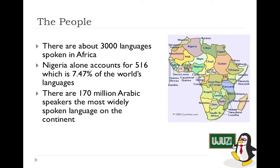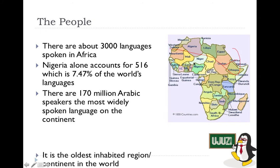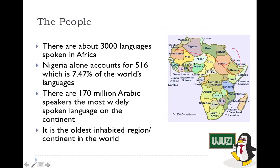The most widely spoken language in Africa is actually Arabic — 170 million people speak Arabic. Most of the northern parts of Africa, including Morocco, Algeria, Libya, Egypt, Chad, and surrounding areas, speak Arabic, which also has some connection to the fact that a lot of them are Islamic. Africa is also the oldest inhabited region in the world.